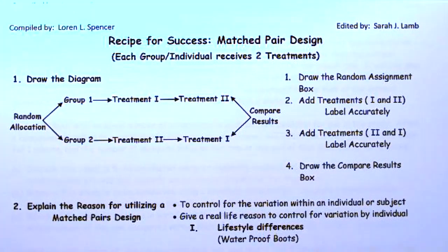Some people sunburn more easily, so we might want to try the new sunscreen on one arm and the old one on the other arm, to equalize the differences between individuals. We can't control for all the differences between individuals unless we test them twice. We would love to do matched pair designs all the time because then we're controlling for variations between individuals.